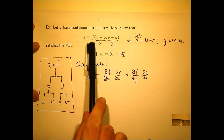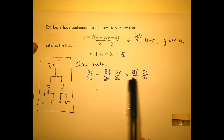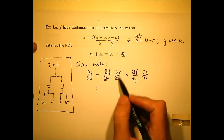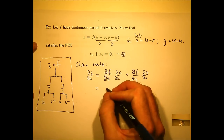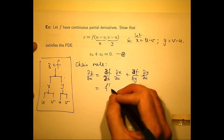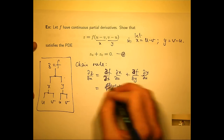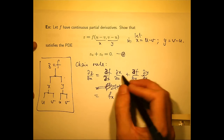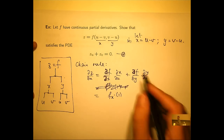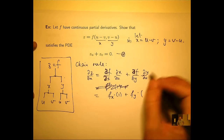We don't know what f is, so we can't calculate those two derivatives. But we can calculate the other two. dx/du is going to be 1. So I'm just going to write this as f_x. And dy/du is minus 1.